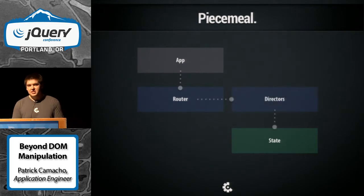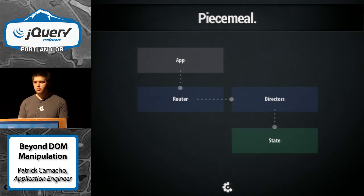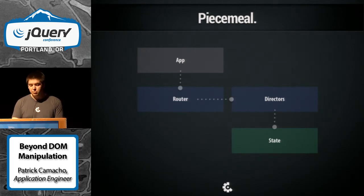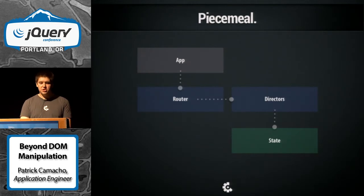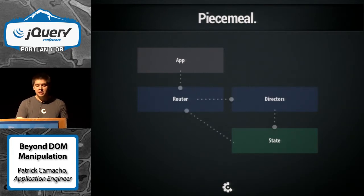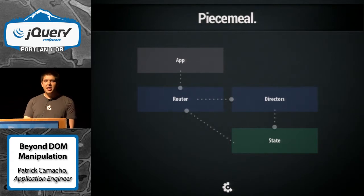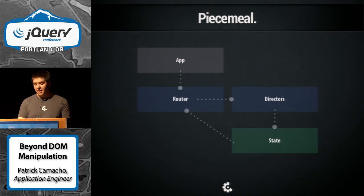So we invented this idea of a director. The director's responsibility was pretty straightforward: it would subscribe to the router, it would listen for any change events that came through, and then it would bring up a given state. Every time that we wanted to navigate to a new state using push state, the director would make sure that we tore down all the previous state's logic and started up again. We had this very simple architecture, piecemealed together, and it had successfully gotten us off of Rails and onto Backbone.